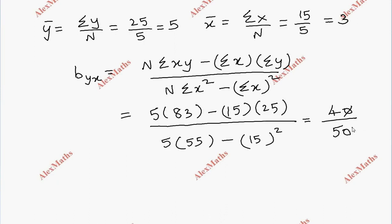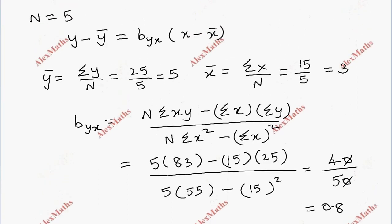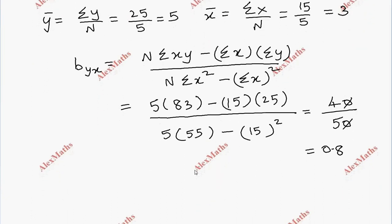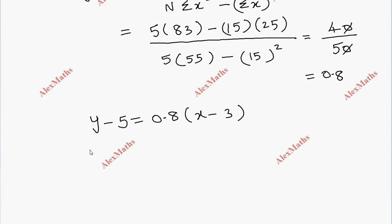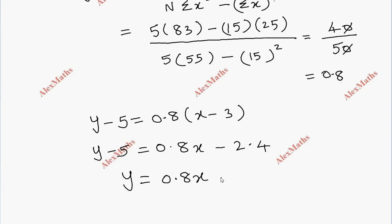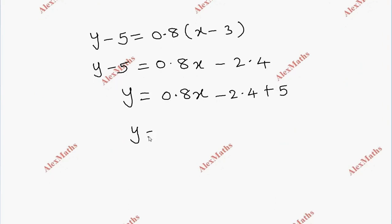After simplification, the numerator equals 40 and the denominator equals 50, so b_yx equals 40 divided by 50 equals 0.8. Substituting into the regression equation: y minus 5 equals 0.8 into x minus 3, which gives y minus 5 equals 0.8x minus 2.4.